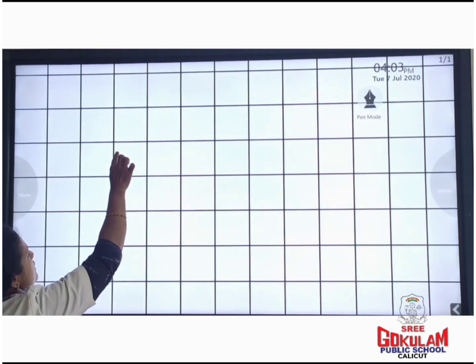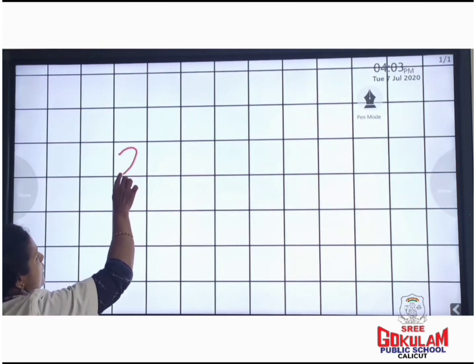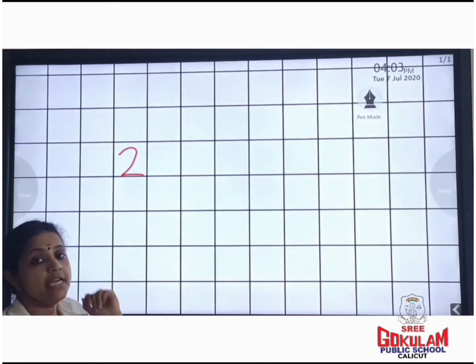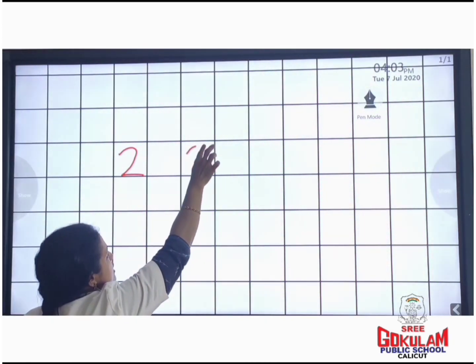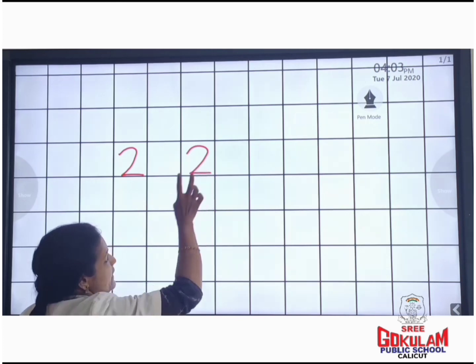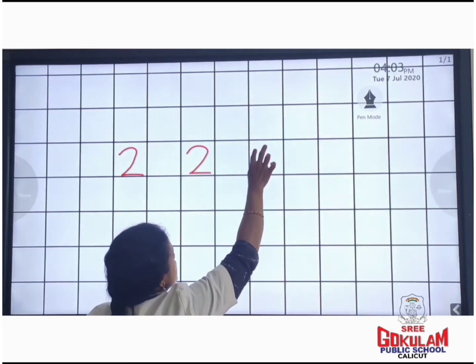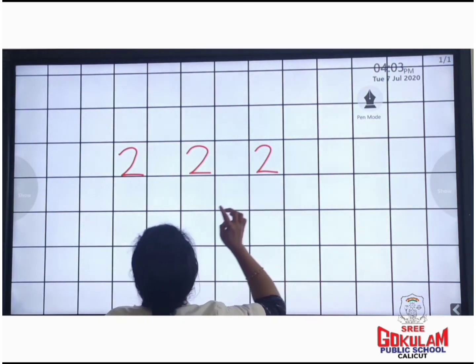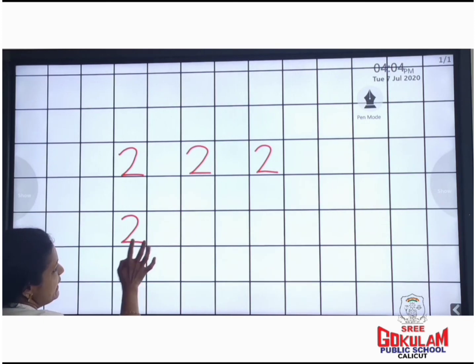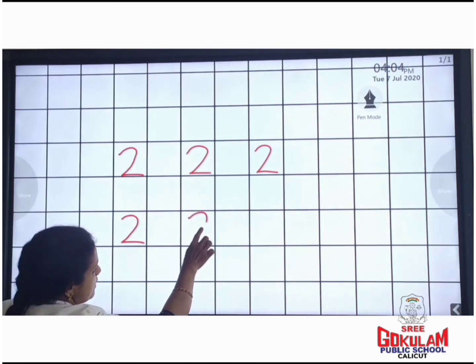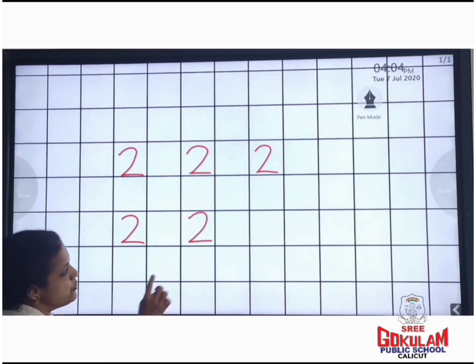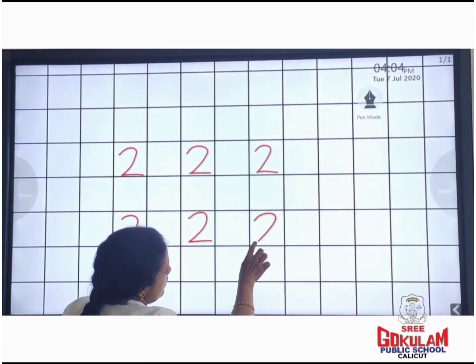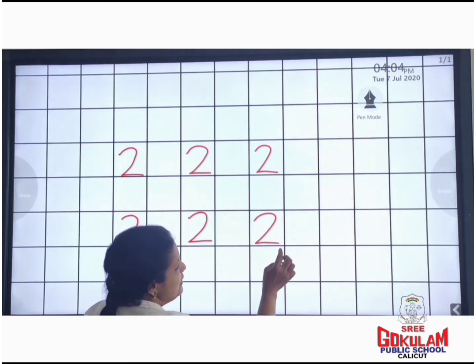Are you ready to learn how to write number two? Look here. First, draw a curve and a sleeping line — this is number two. Curve and sleeping line, number two. Curve and sleeping line, number 2.